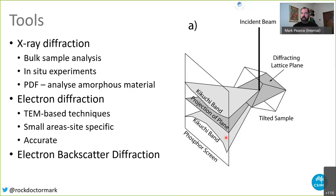We can use the same physics to look at how electrons are diffracted, and there are various TEM-based techniques for electron diffraction giving very accurate, site-specific results. The technique I've spent a lot of time working with since my PhD is electron backscatter diffraction (EBSD), an SEM-based technique where the incident electron beam hits the sample surface tilted to 70 degrees to aid the exit of electrons.